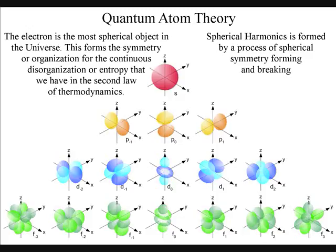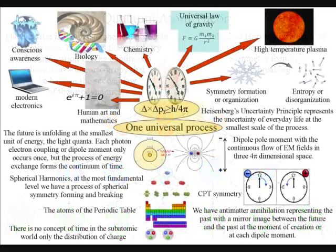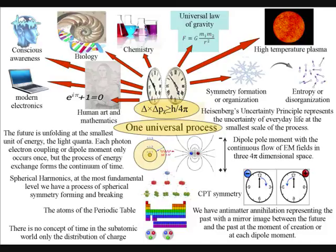The reason why there is something rather than nothing is that a process of spherical symmetry forming and breaking will naturally form entropy or disorganization with a built-in potential for ever greater symmetry formation. This is because the future is not based totally on uncertainty, it is based on broken symmetry relative to the structure of the atoms.